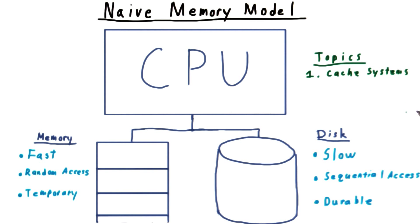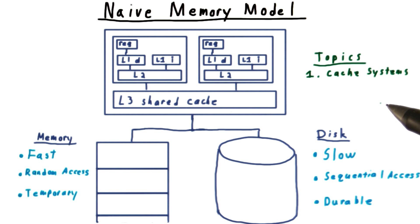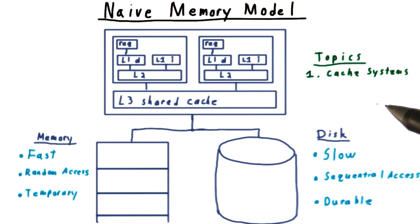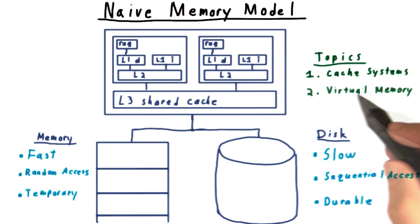In this lecture, we're going to refine this picture in two ways. First, we'll look at cache systems, which allow the CPU to access the same information that is in main memory, only faster. Understanding how cache systems work will help you optimize your code when you need to.